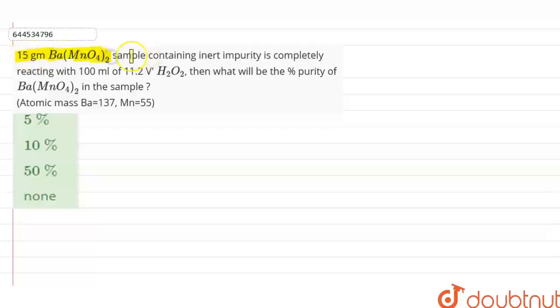Ba(MnO4)2 sample containing inert impurity is completely reacting with 100 ml of 11.2 volume H2O2. Then what will be percentage purity of Ba(MnO4)2 in the sample? And we have given here atomic mass of barium and manganese.